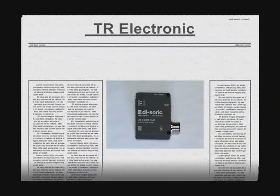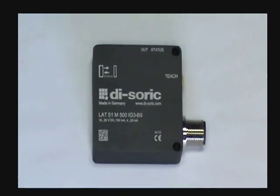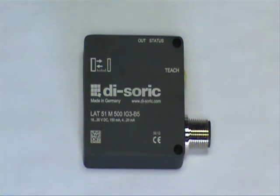The LAT51M laser distance sensor precisely linearized for object detection. The LAT51M laser distance sensor includes a digital output PNP or NPN capable, as well as a 4-20mA analog output or a 0-10V analog output, depending on the model.